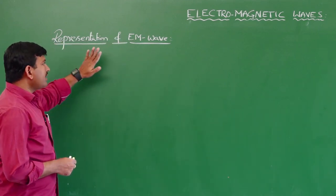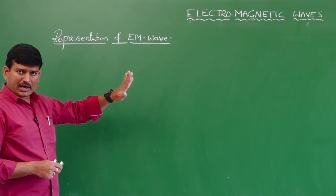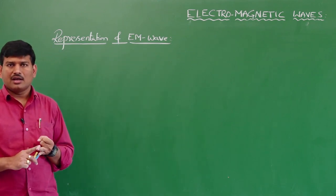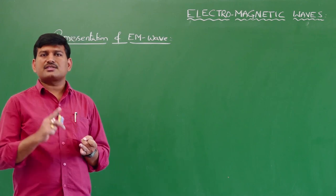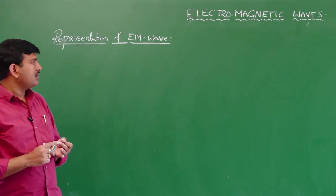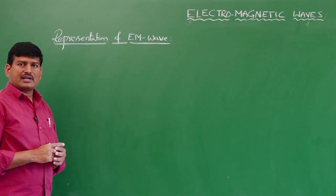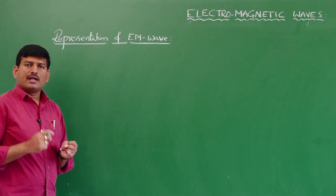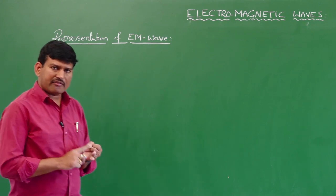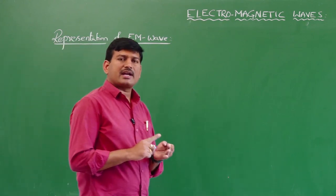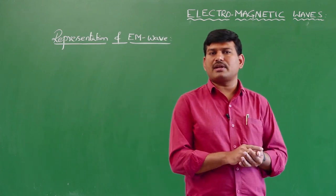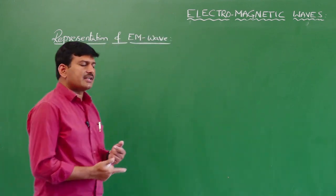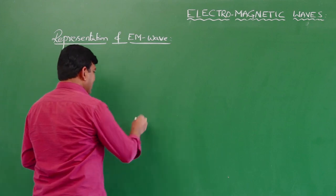In an electromagnetic wave, the electrical vector and magnetic vector are propagating in a direction perpendicular to both field vectors. That means in an electromagnetic wave, the direction of propagation, the electric field vector, and the magnetic field vector are mutually perpendicular to each other. So how to represent it graphically or pictorially?